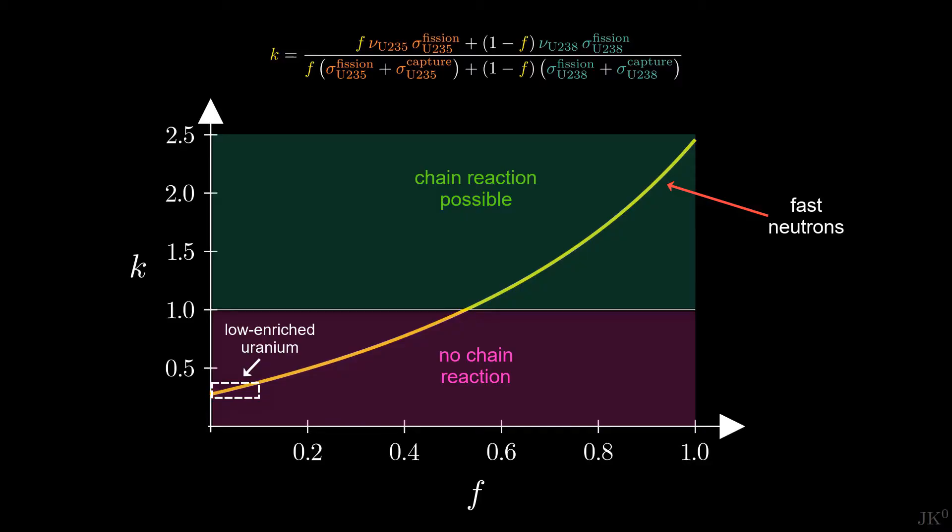We have just demonstrated that fast neutrons cannot produce a self-sustaining chain reaction in natural uranium. Then the obvious question is, how can a reactor work?